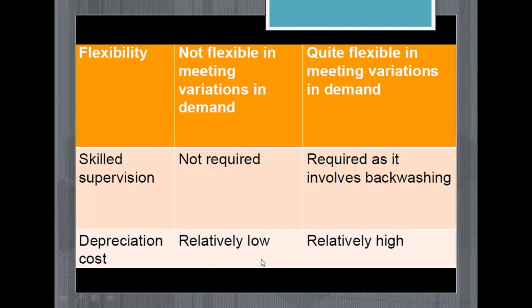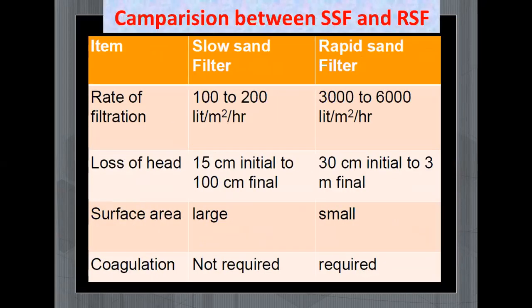The depreciation cost refers to the reduction in value over time — similar to how vehicles depreciate. For the slow sand filter the depreciation cost mode is relatively low and for the rapid sand filter it is relatively high. So this was the comparison between the slow sand filter and the rapid sand filter.